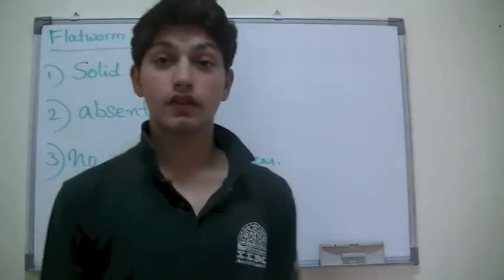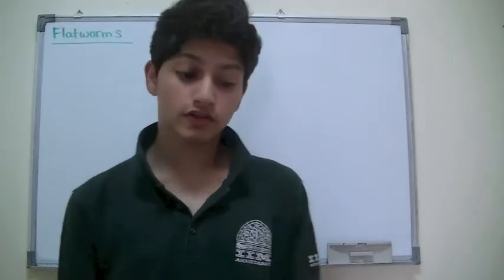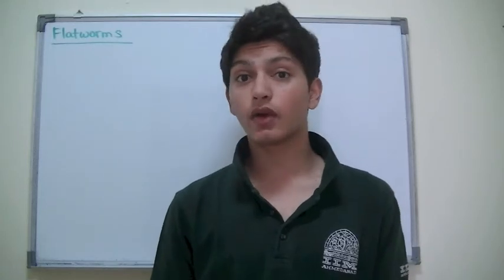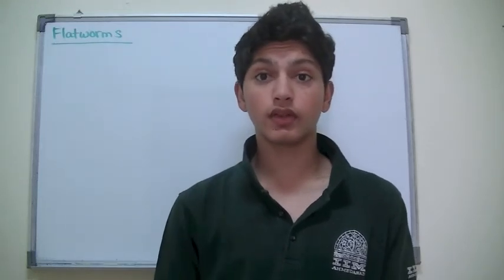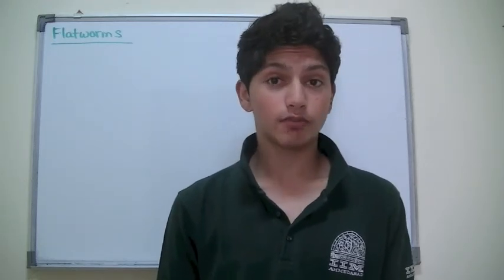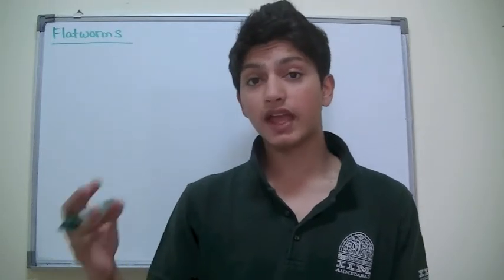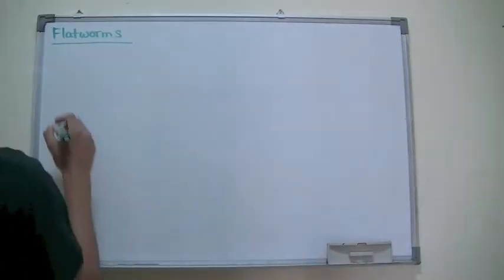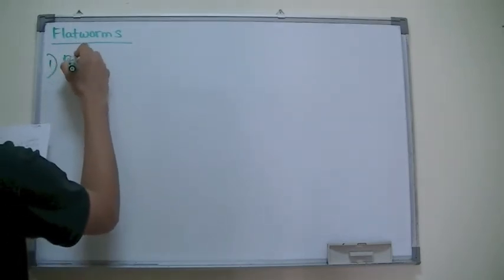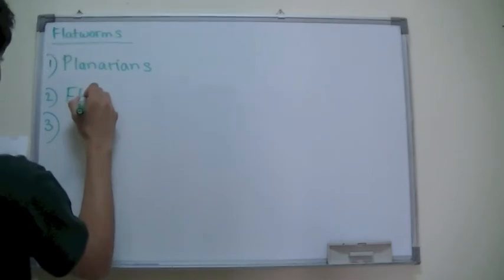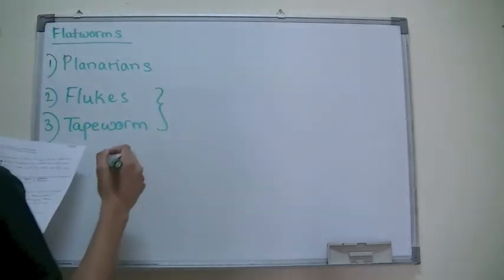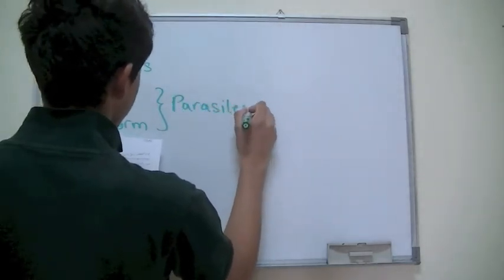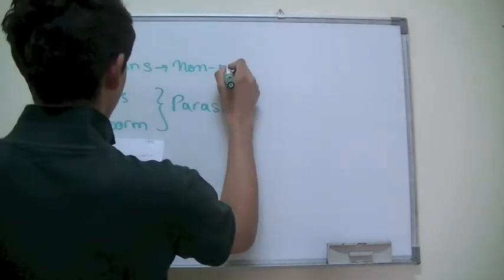So let's move on to the first type of flatworm. There are three different types of flatworms, each with their own unique set of characteristics. The first one is non-parasitic: planarians. The other two are parasitic. The second is flukes and the third is tapeworm. So both flukes and tapeworms are parasitic, while planarians are non-parasitic and don't harm anyone.